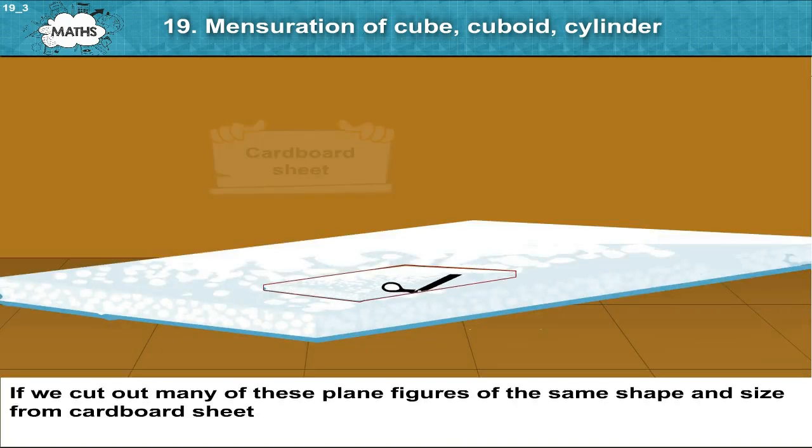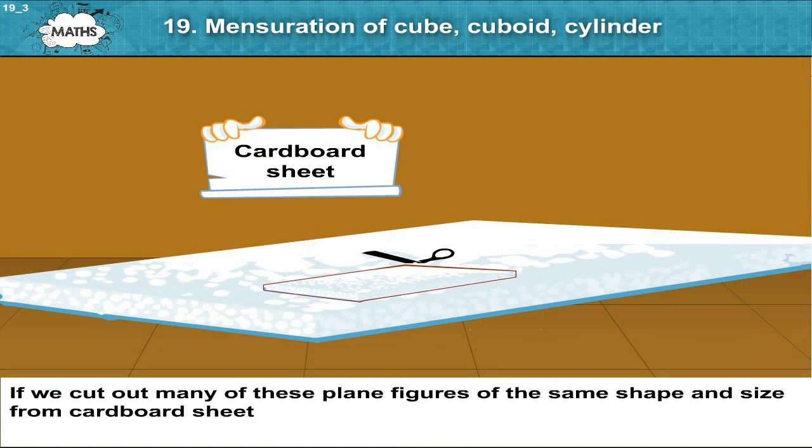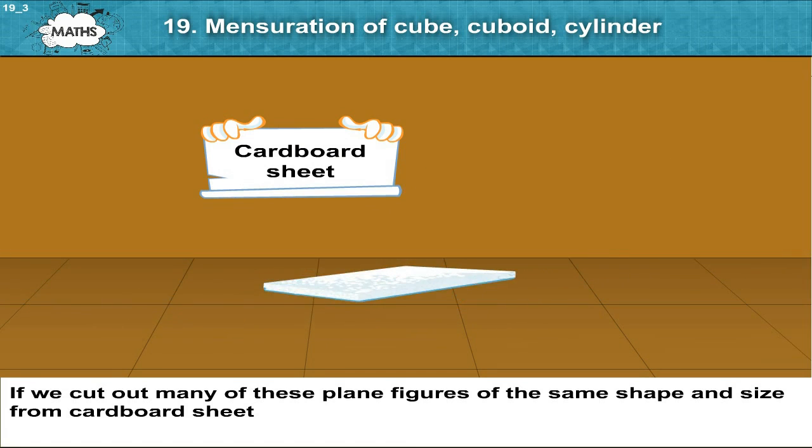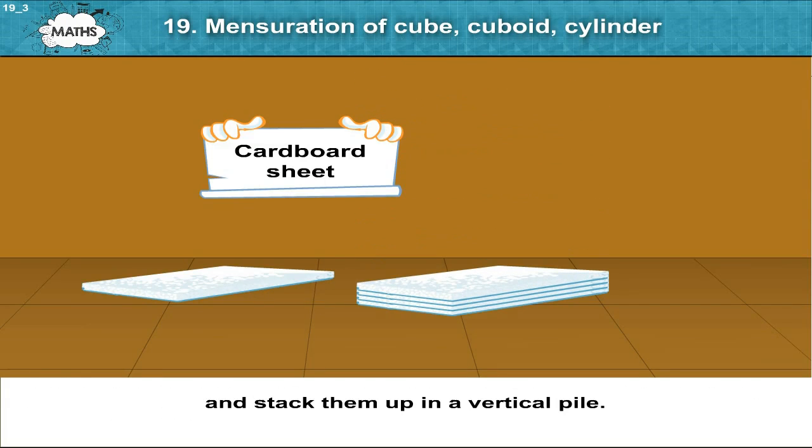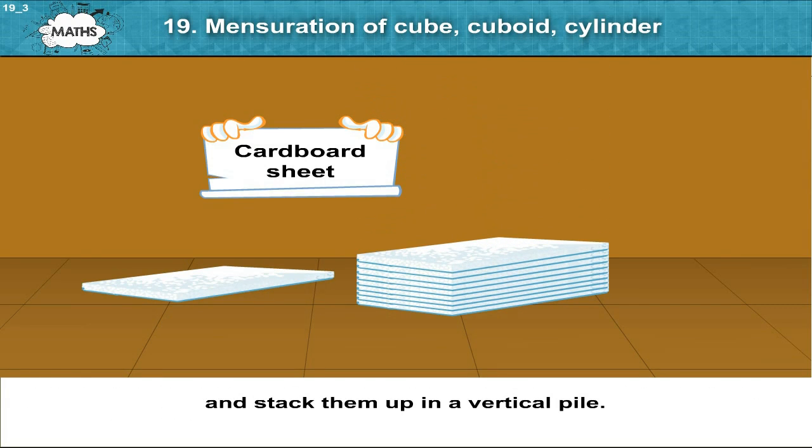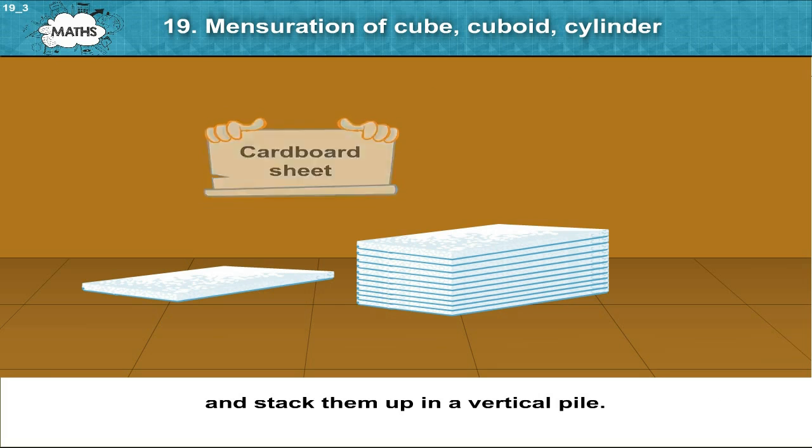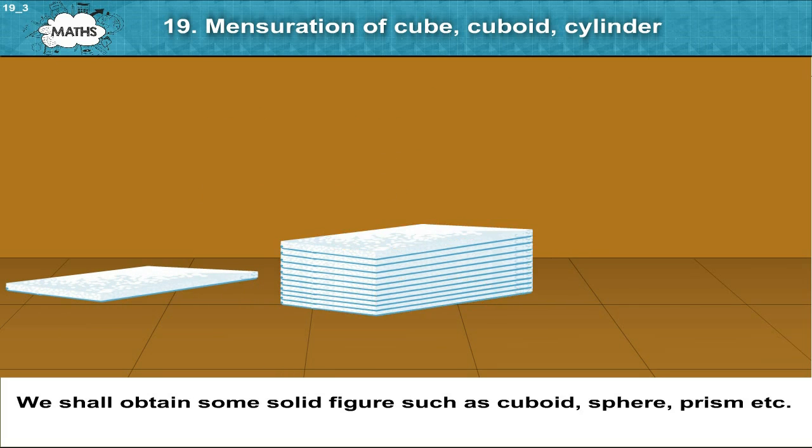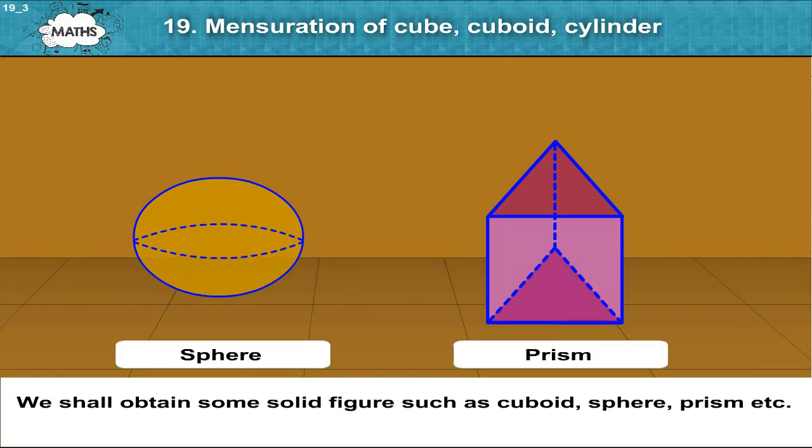If we cut out many of these plane figures of the same shape and size from cardboard sheet and stack them up in a vertical pile, we shall obtain some solid figures such as cuboid, sphere, prism, etc.